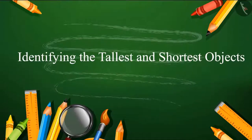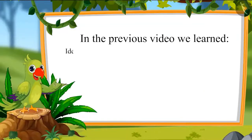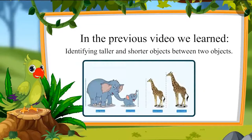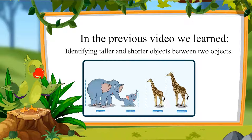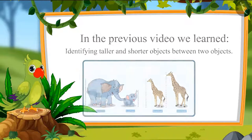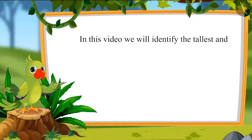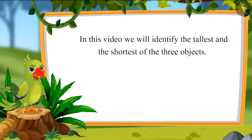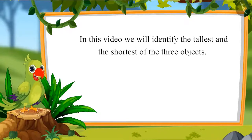Identifying the tallest and shortest objects. Children, in the previous video we learned to identify taller and shorter objects between two objects. In this video we will identify the tallest and the shortest of three objects.